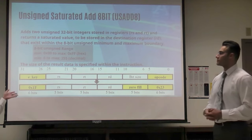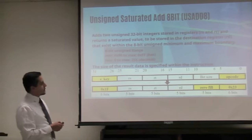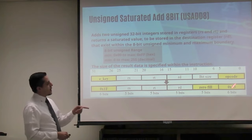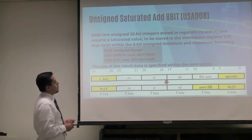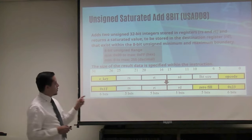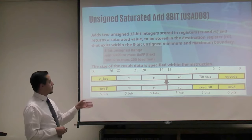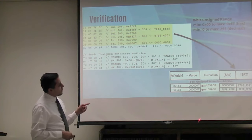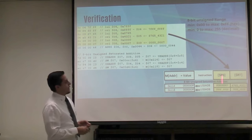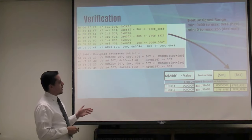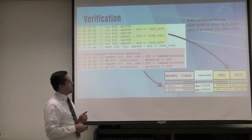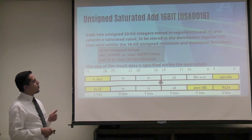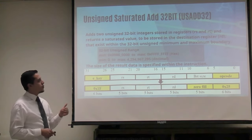Now for performing the unsigned add and subtract operations, the bit size field is zero because it's specified within the instruction and each one has a new opcode. Here is the range for 8-bit unsigned addition. We're taking the 32-bit values and the result is what gets saturated to the specified size. In our verification, we load two registers and add them — they exceed the 8-bit range, so they saturate to the highest value which is FF. Same concept for 16-bit unsigned add with a bigger range and a new opcode. For 32-bit, same concept, bigger range, new opcode.